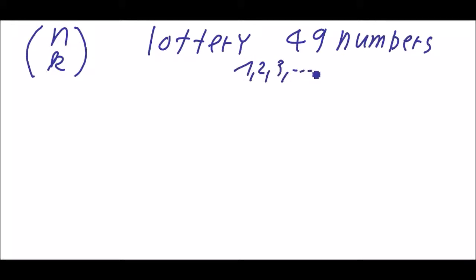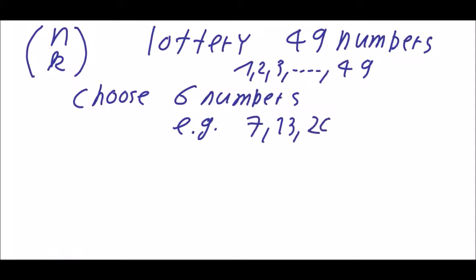For example in a lottery you have 49 numbers. So maybe you have 1, 2, 3 up to 49 and then you choose 6 numbers, different numbers of course. For example 7, 13, 20.